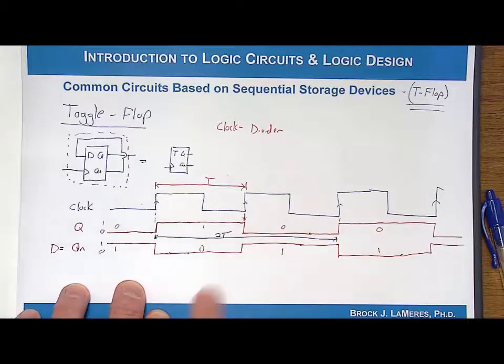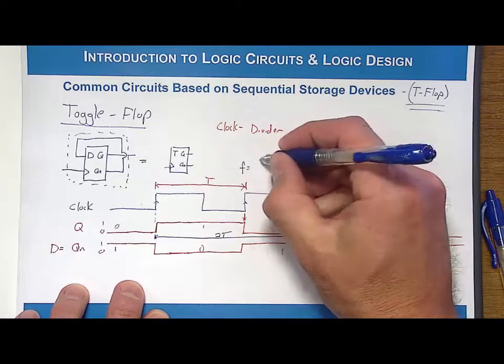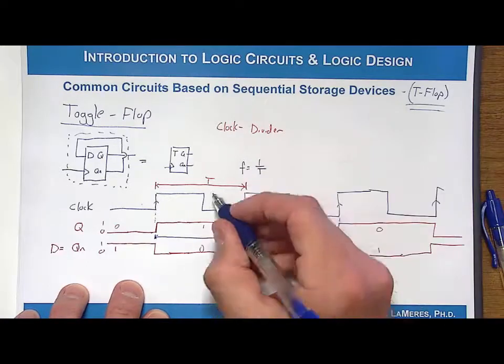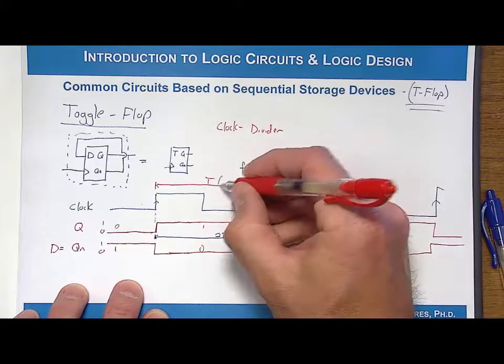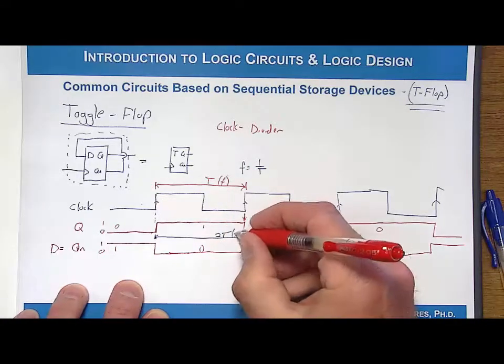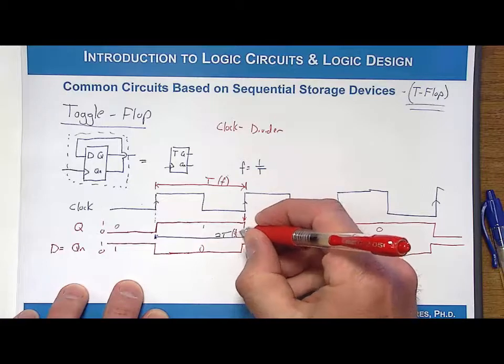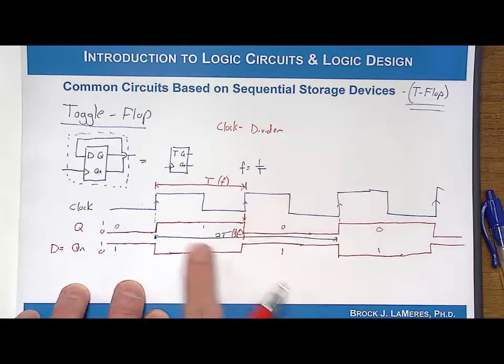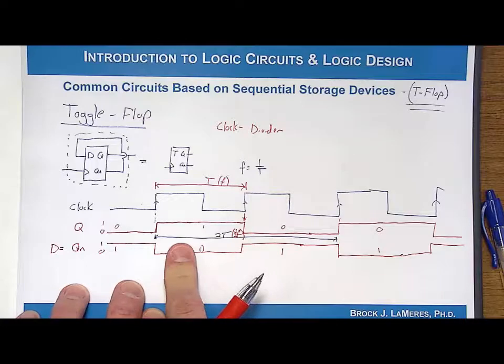I've actually doubled the period, and frequency is equal to 1 over period. So if I had an associated frequency here, when I doubled the period, that corresponds to halving the frequency. So this is a divide by 2 clock divider.